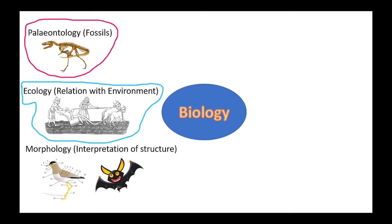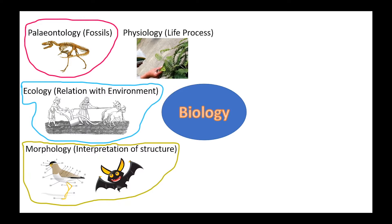Morphology is the branch of biology that deals with the form and structure of animals and plants. Physiology is the branch of biology that deals with the normal functions of living organisms and their parts.